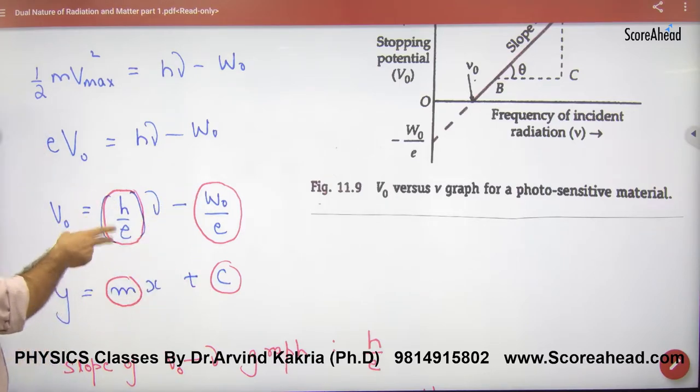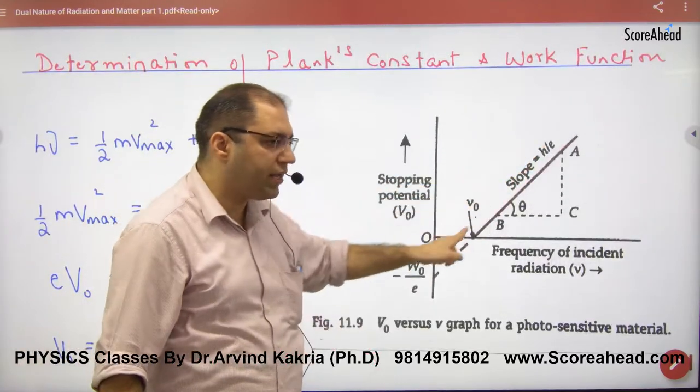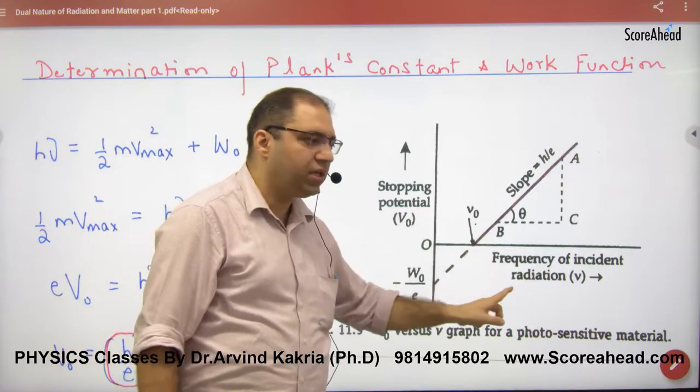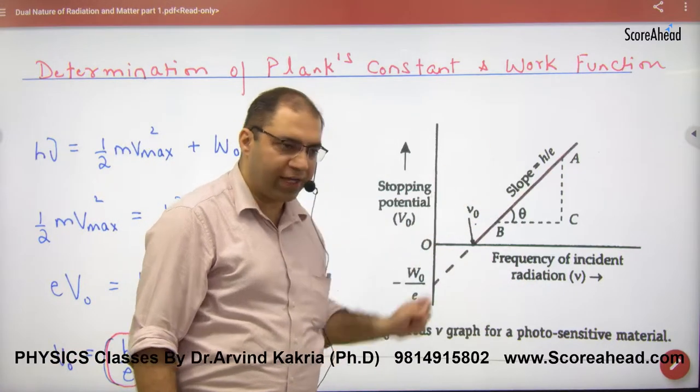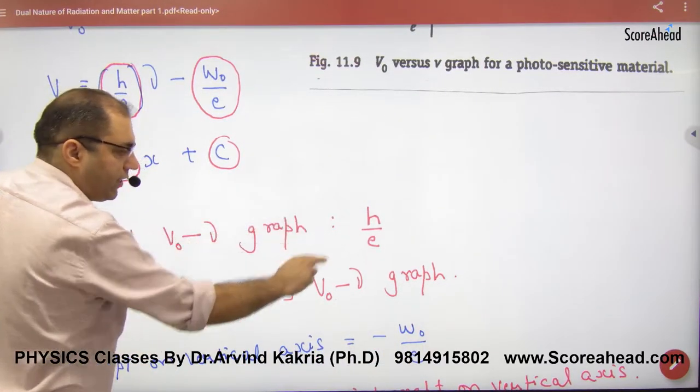Slope will be h by e in the graph. And intercept is negative intercept, which will cut the y-axis at minus W₀ by e. The slope of V₀ versus frequency graph is h by e.